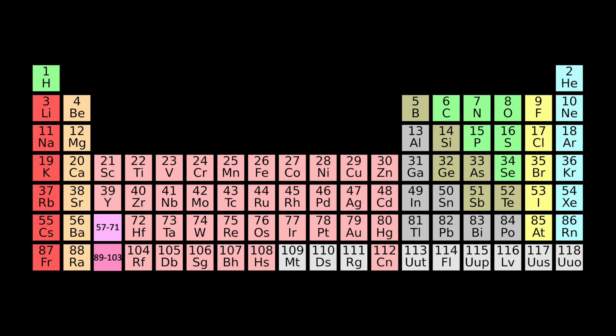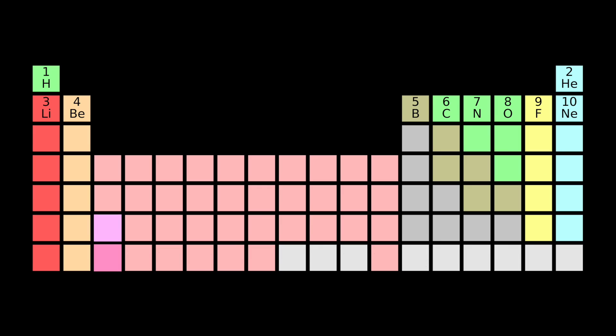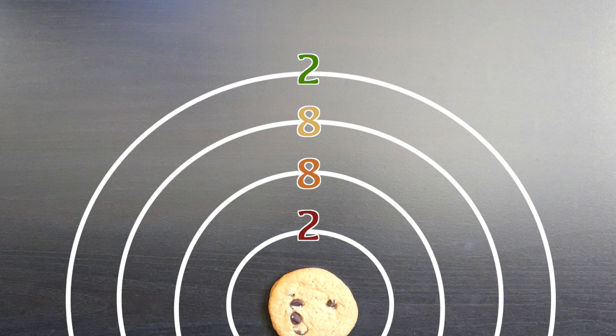Okay, back to chemistry. So far we have visualized the electron configurations of the first ten elements. We have also applied the 2882 rule to predict the behavior of each of these elements.